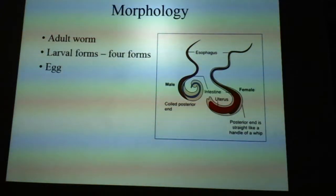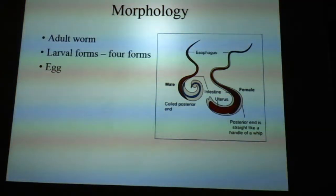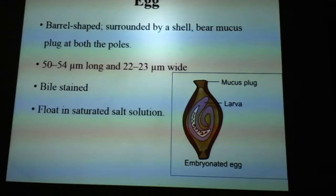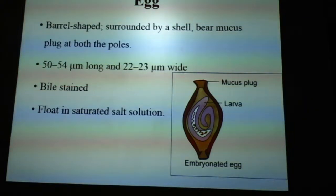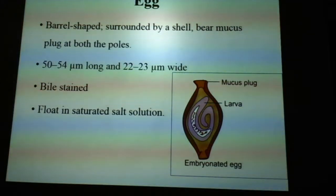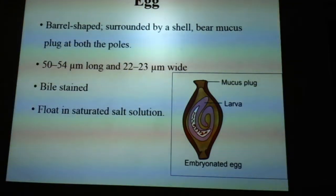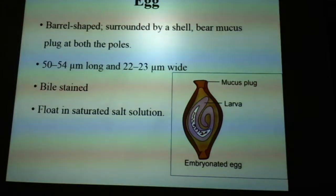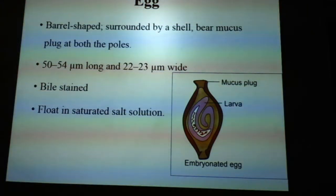Trichuris trichura has all three forms: adult form, larval form, and egg. In larval forms there are four stages. The egg has a bangle shape and is surrounded by a shell. It has a mucus plug at both poles, giving it the bangle shape. It measures about 50 to 54 micrometers in length and 20 to 23 micrometers in width. It is a bile-stained egg and floats in saturated salt solution.